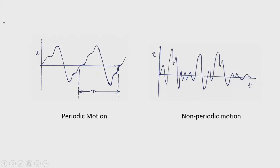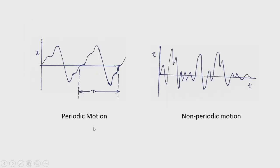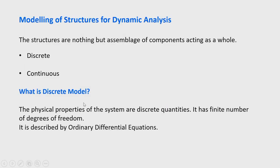For example, the three-storied building is actually a continuous model but we idealized it as a discrete one with 3 degrees of freedom. Discrete models are analyzed with ordinary differential equations because they are dependent on time only, making it an initial value problem.